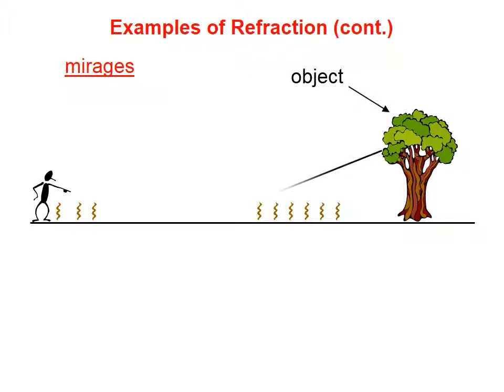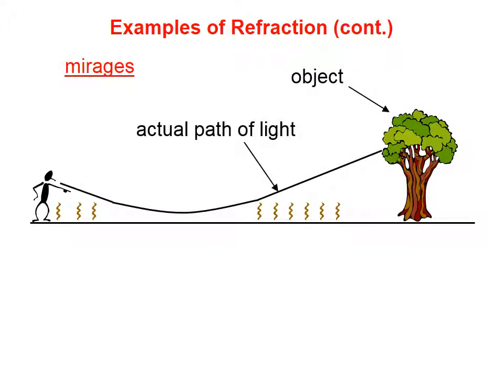In a mirage, we have light that is refracted. Let's say we have an object — in this case, a tree. Light hits it from the sun and reflects out in every direction. Some of that light goes straight from the tree to our eyes, so we perceive the tree to be right there.